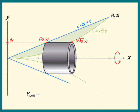The volume of this shell is 2π times the radius times the height times the thickness. The radius is y. What is the height or the length?